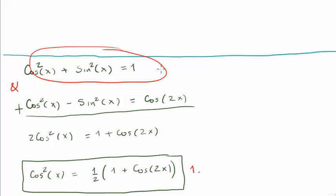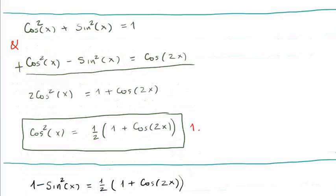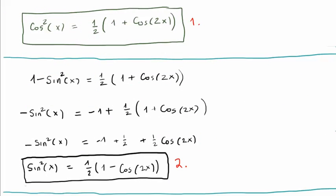Thereafter if we substitute this equation in for cosine squared x and rearrange we are able to get a similar expression for sine squared x. I'm going to call this equation number 2.